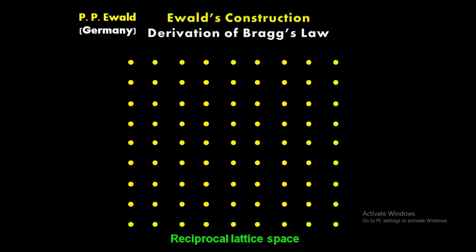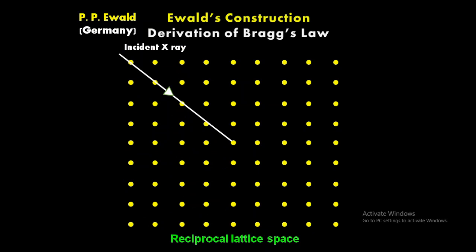This concept of Ewald's construction was given by German scientist P.P. Ewald, who considered the reciprocal lattice space in which it consists of a number of reciprocal lattice points. Now suppose x-rays are incident on a particular lattice point, which we can call point A.